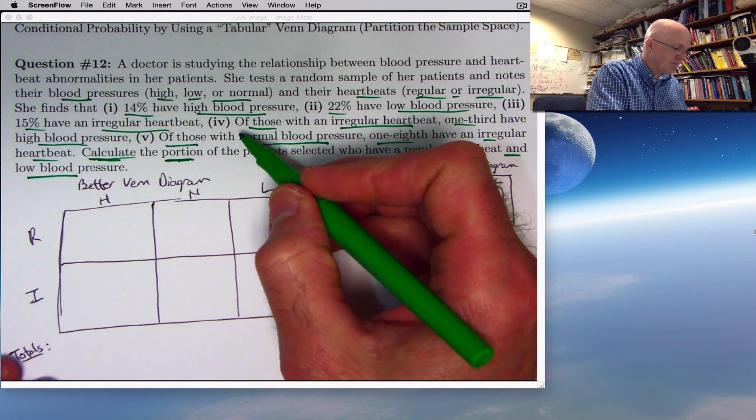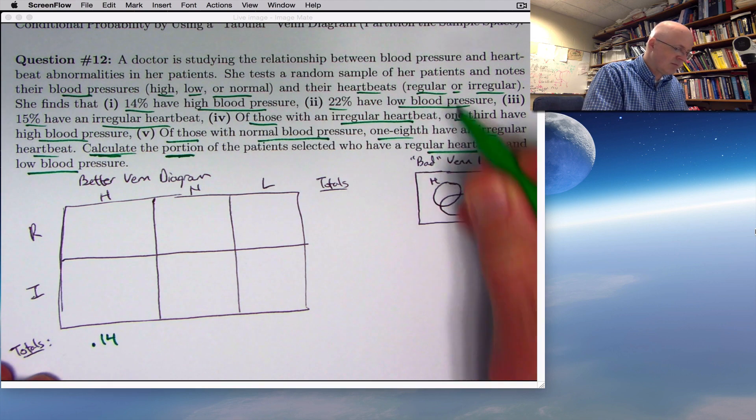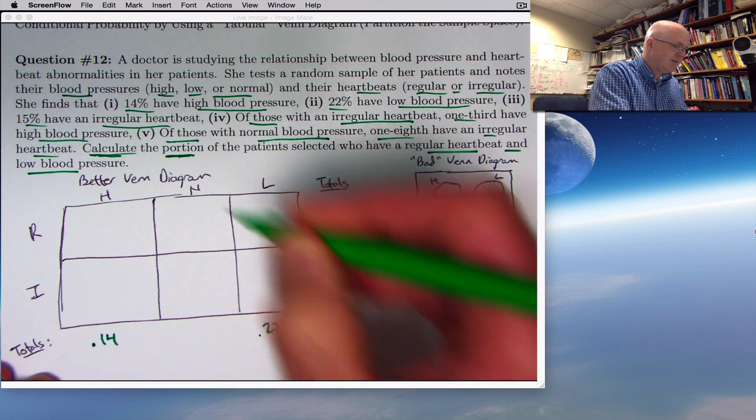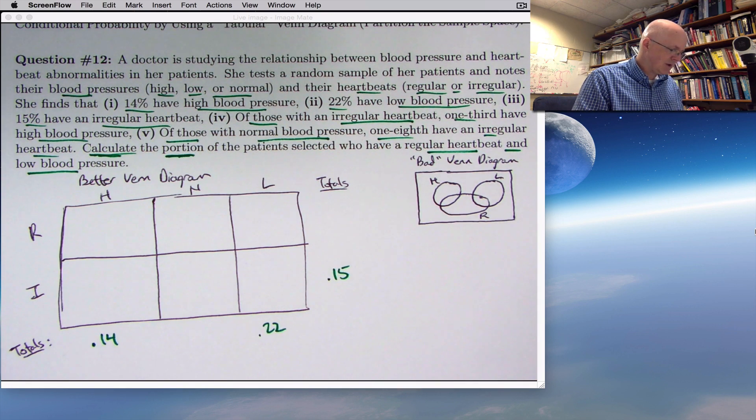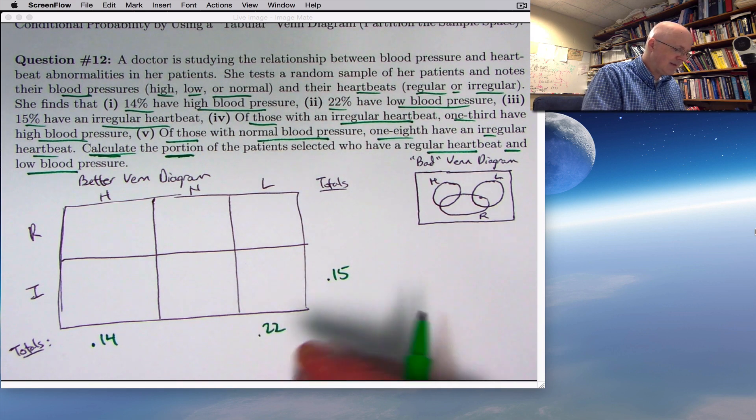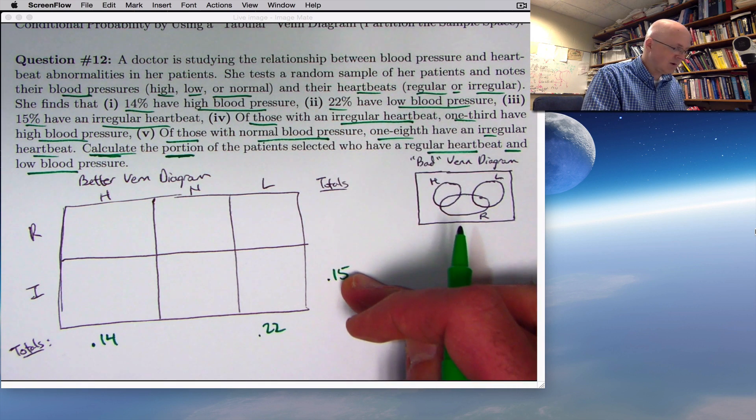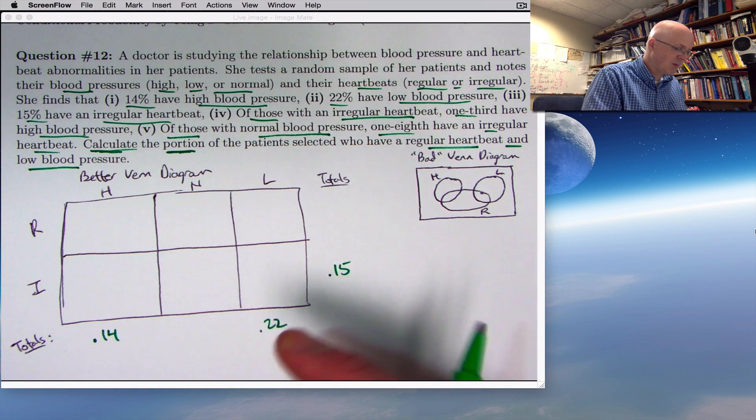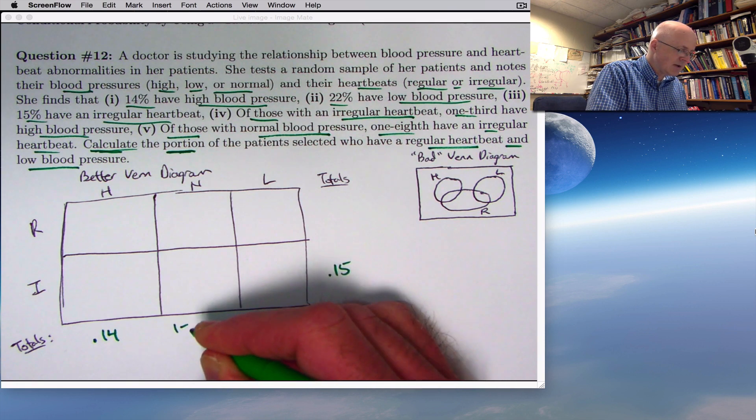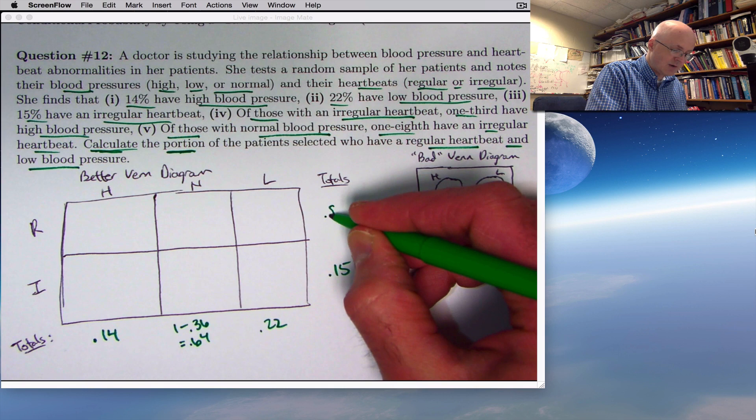But again, the given information for 1, 2, and 3 is actually some totals. 14% have a high blood pressure. Put a 0.14 down here. 22% have low blood pressure. Put a 0.22 down here. 15% have an irregular heartbeat. Put a 0.15 right there. And it should make sense that the numbers across this bottom line here have to add to 1. And the numbers over here have to add to 1. These things partition the sample space. 0.14 plus 0.22 is 0.36. So the number that goes here is 1 minus 0.36, which is 0.64. And 0.15 taken away from 1 is 0.85. So I should put a 0.85 right there.